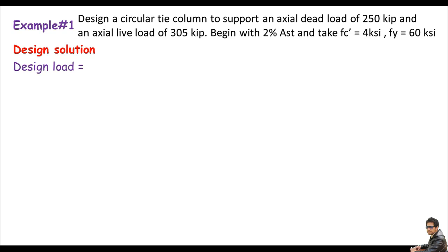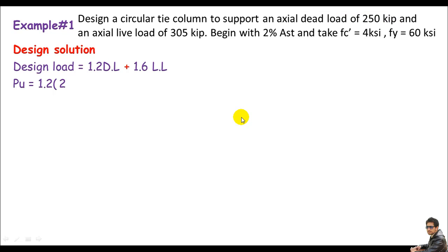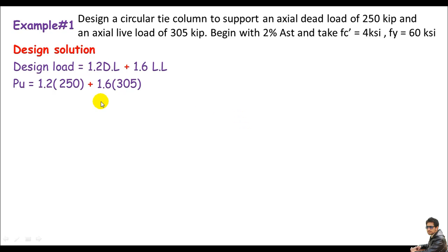My first approach is the design load. We have two types of loads: dead and live. Using the formula 1.2(Dead) + 1.6(Live), plugging in: Pu = 1.2(250 kip) + 1.6(305 kip). Doing the math, we get Pu = 788 kip. This is the design load strength of the circular tie column.